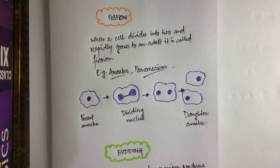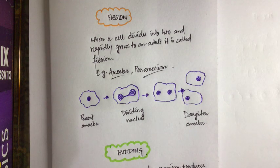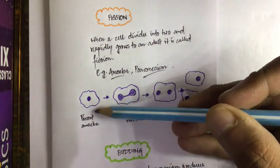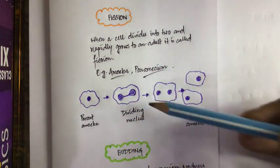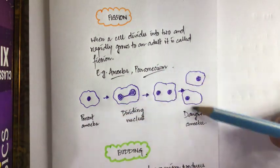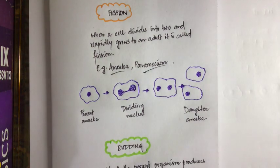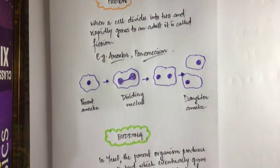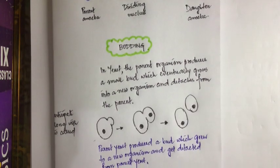Fission is very common in amoeba and paramecium. Amoeba increases its numbers through binary fission, and paramecium increases its numbers through multiple fission — where a single cell divides to produce more than two cells. In the diagram you can see the parent amoeba whose nucleus divides into two new nuclei, and eventually two new daughter amoeba are formed.